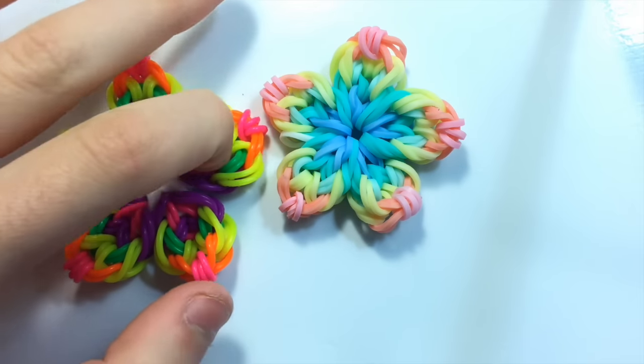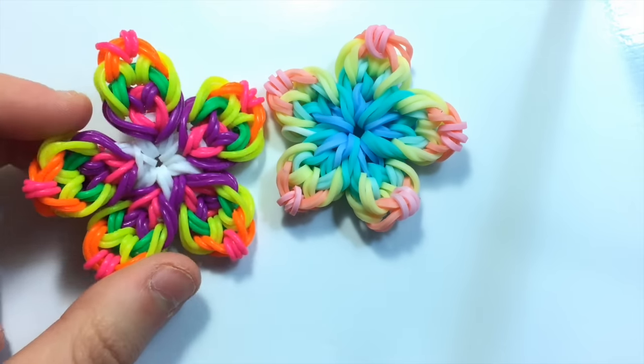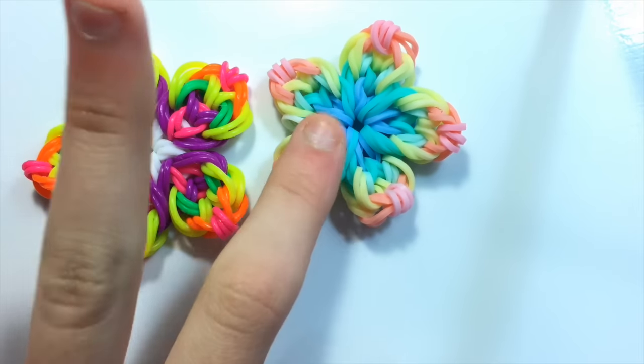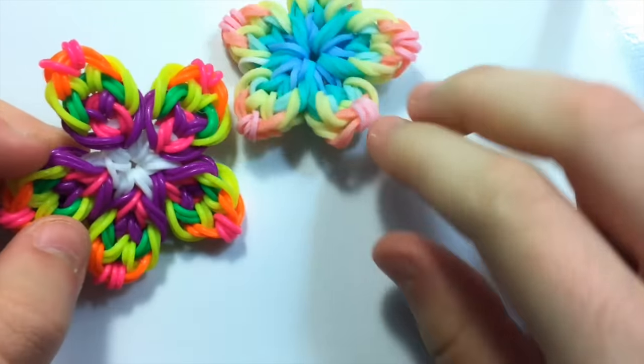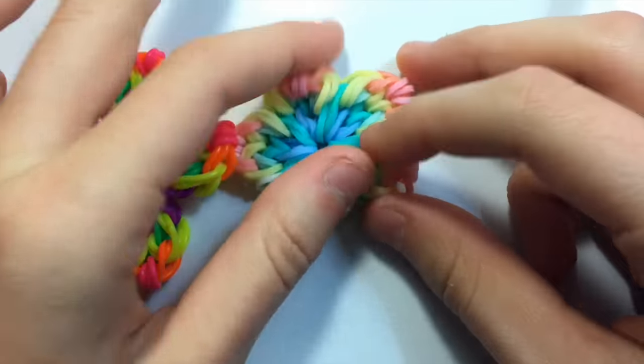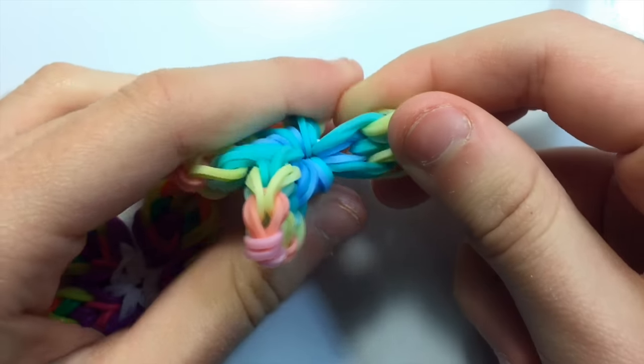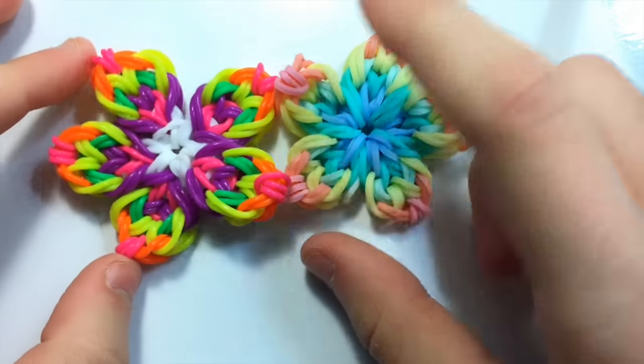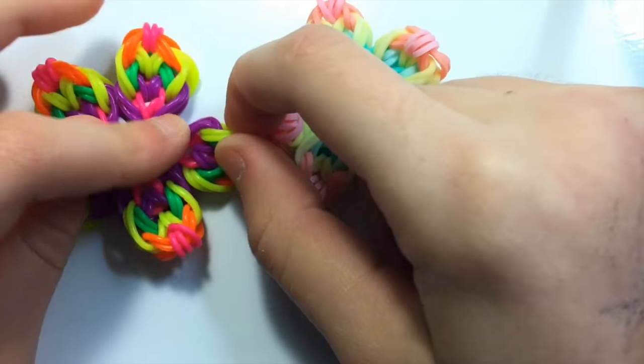This was designed by Fangirl Looms and you may notice that these two look different. This one is bigger and I like this one better. Now for this one, at the end of the petals I pulled two bands through and this one I didn't, so this one's more cramped. But if you want to get this look then just don't add these final two white bands when we get to that point in the tutorial.